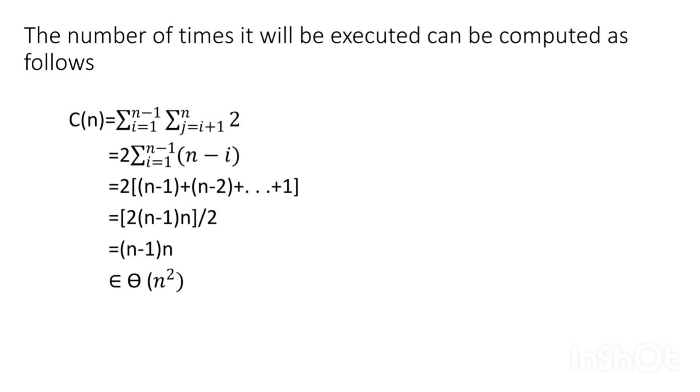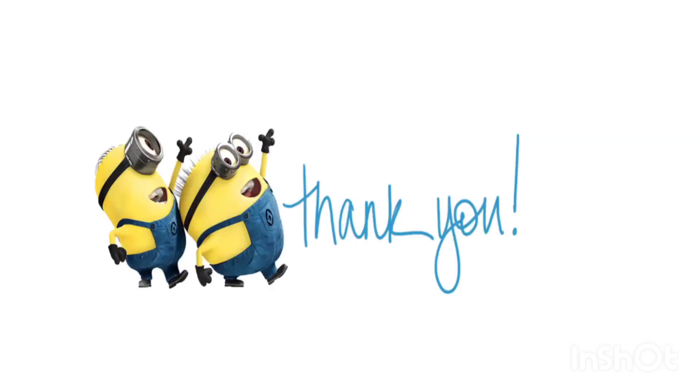And now summation of i is equal to n minus 1 plus n minus 2 plus so on 2 plus 1, equals 2 into n minus 1 into n divided by 2, that is n minus 1 into n. We will get big theta of n square, so that is the time complexity of closest pair. And that's it, thank you so much.